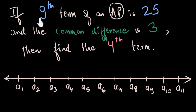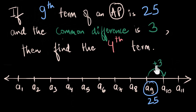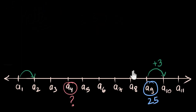Here's the second problem. We know that the 9th term is 25 and the common difference is 3. We need to find the 4th term. Pause the video and try this using the number line method. We are given that the 9th term is 25, so A9 equals 25. One jump is 3 units — that's the common difference. So a jump from the 9th to the 10th term adds 3 units, and that's the case for every jump. We need to find the 4th term, so that's where our question mark is.